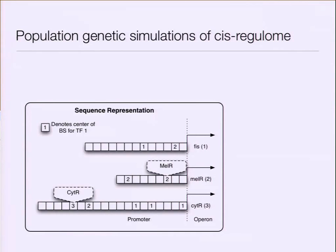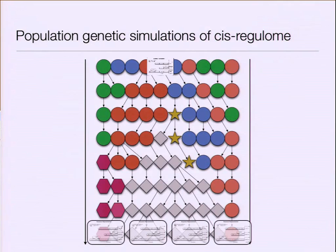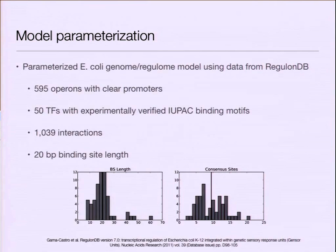In terms of how we actually use this new model in the population genetics context: we take our representation of the network, stick it in an initial population, simulate over long periods of time, and get a distribution. This distribution is our null distribution, and we can use it to assess the properties of cis-regulatory networks. This is what I did for E. coli — I went back to that study from about a decade ago and revisited the problem with this new model, asking what we would expect these cis-regulatory networks to be.